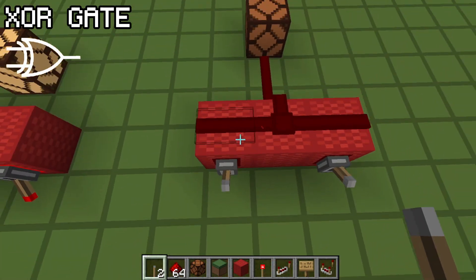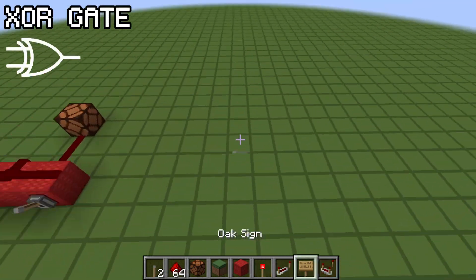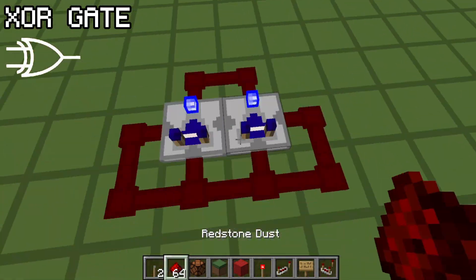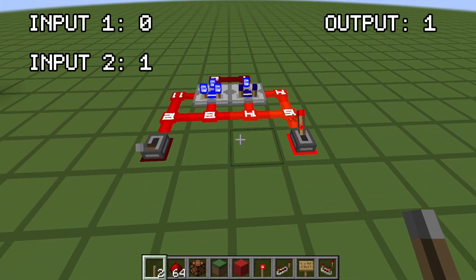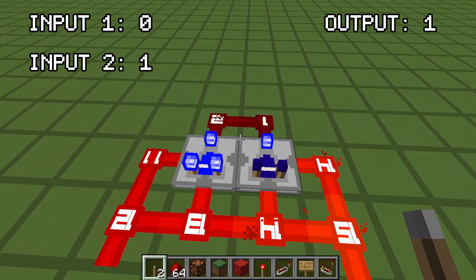Here is where it gets interesting, the XOR gate. It only turns on if exactly one input is on, not both. Perfect for binary addition.